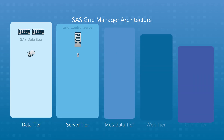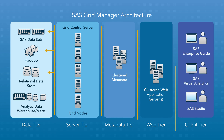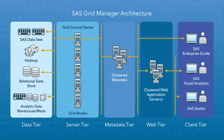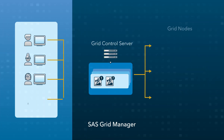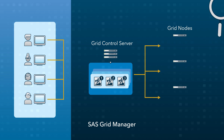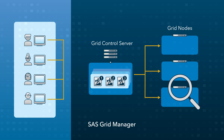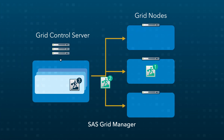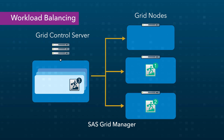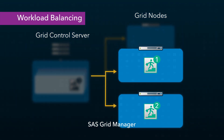SAS Grid Manager is a multi-tier architecture that enables many users to submit jobs to a grid of computers for data analysis and reporting. SAS Grid Manager constantly monitors the grid nodes and is aware of each node's processing activity and resource capacity. At regular intervals, SAS Grid Manager moves jobs from the queues, placing each job on the node that is most capable of executing it at that time.